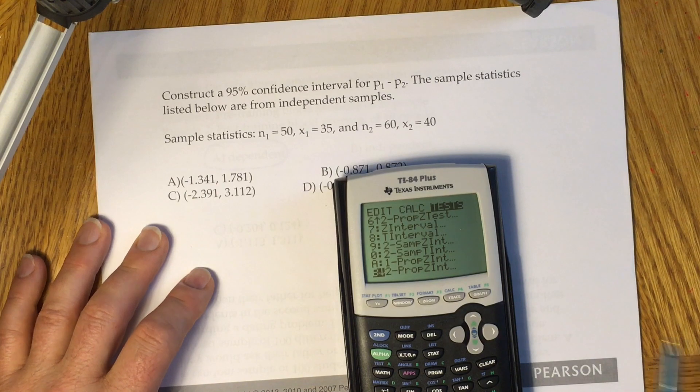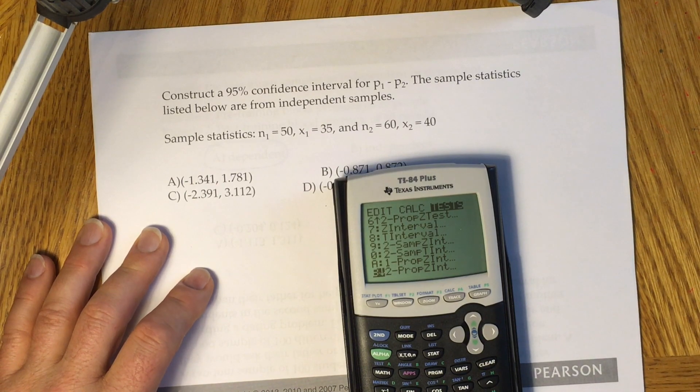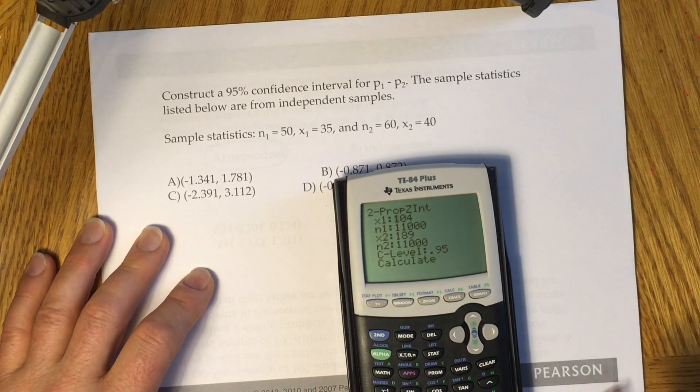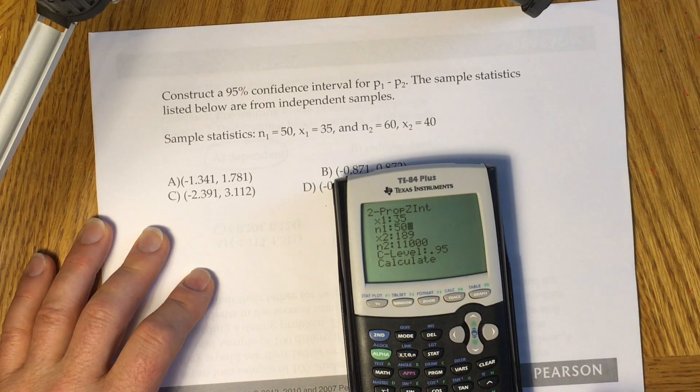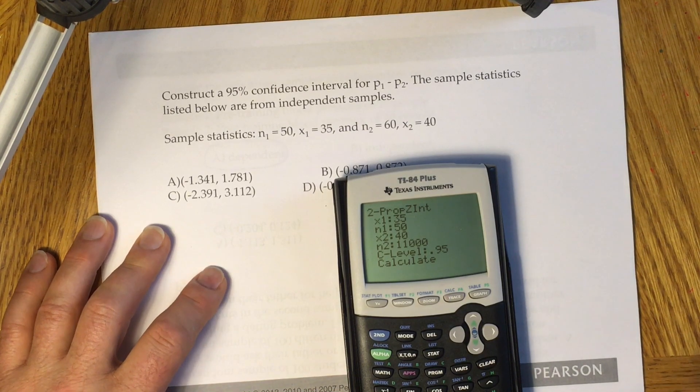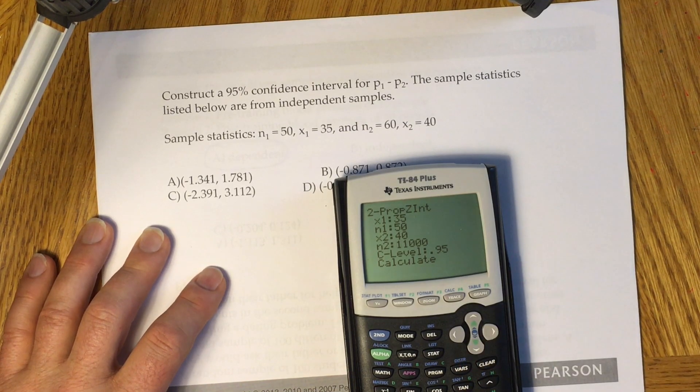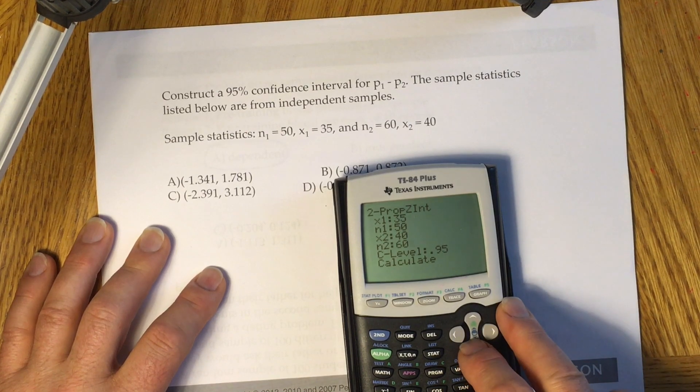Then you have to put in the values: x1=35, n1=50, x2=40, n2=60.